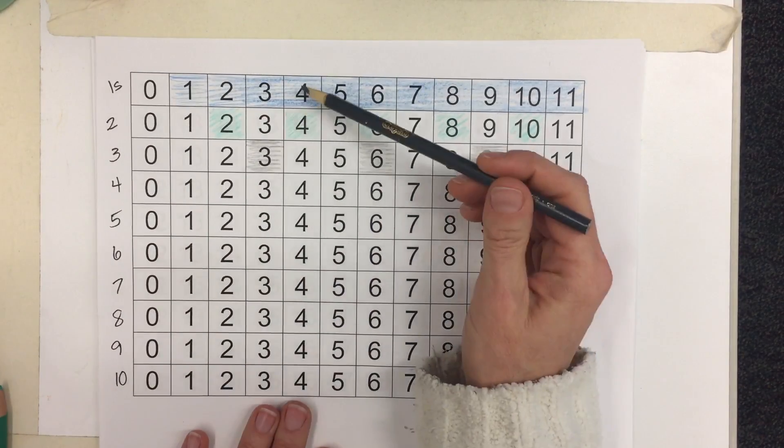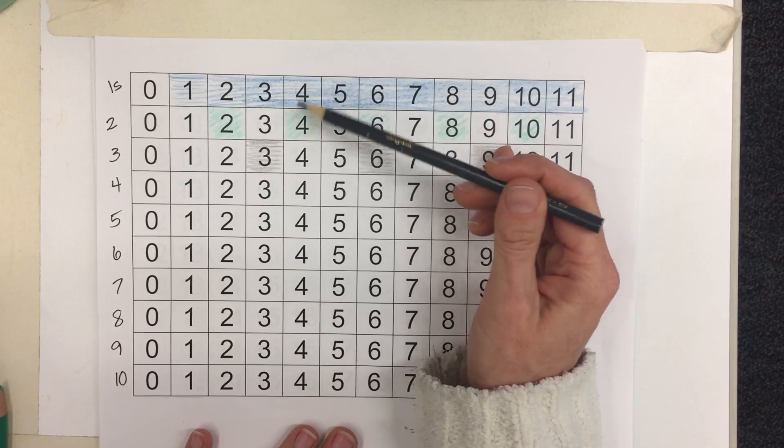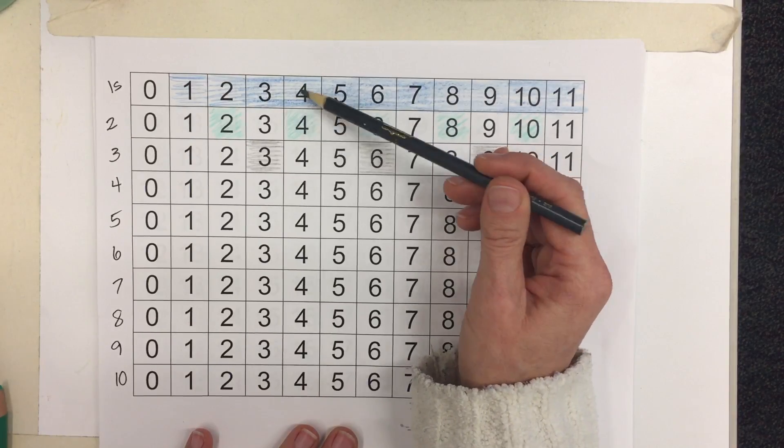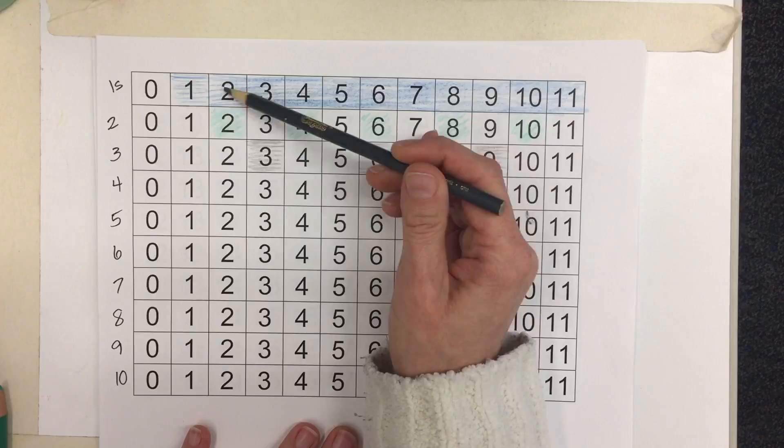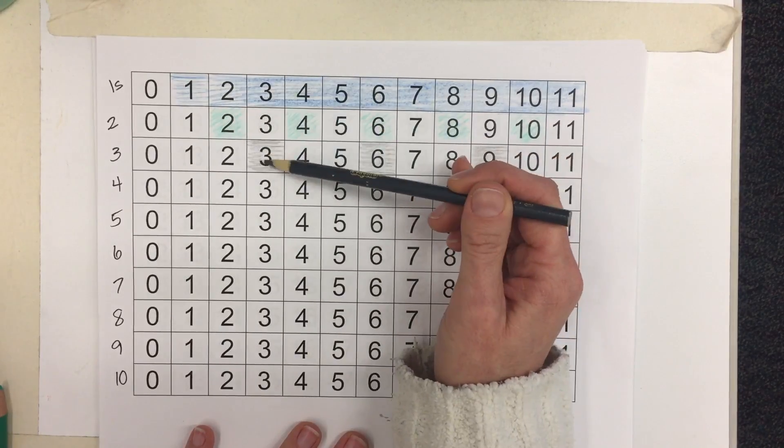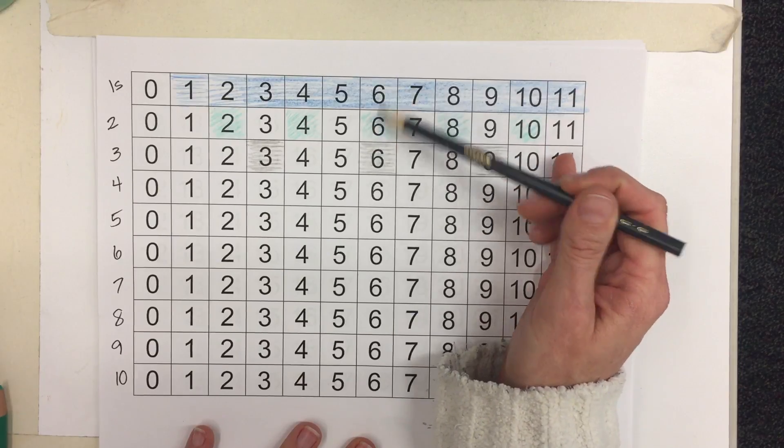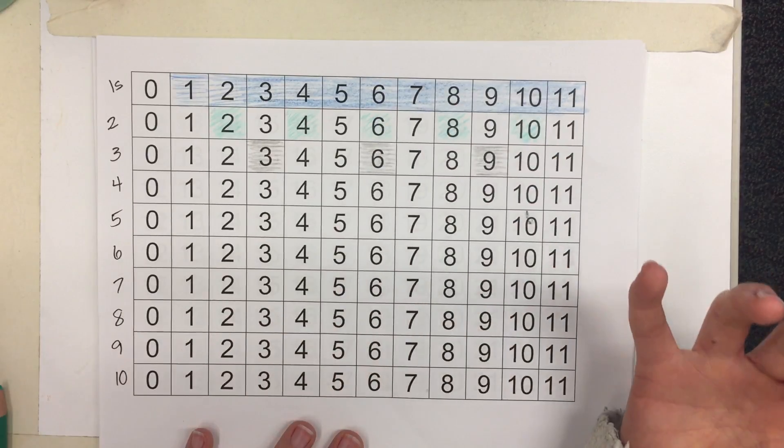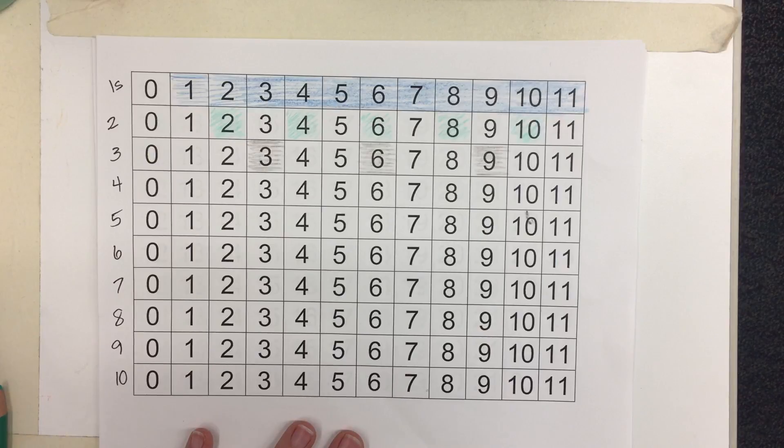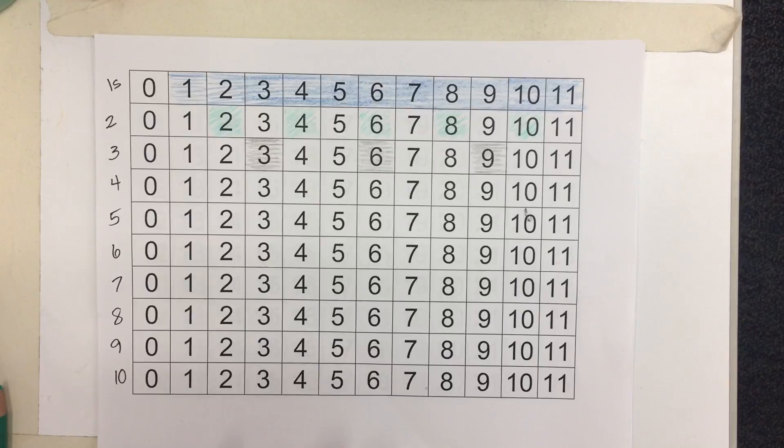And what you're going to start to notice is patterns. So you'll see that 1 and 2 both share 4 and they both share 2 and they both share 6 but they don't share 3. But 1's, 2's, and 3's all share 6. So when you're finished you will have this beautiful chart with your multiples 1 through 10 and you'll start to see patterns of common multiples.